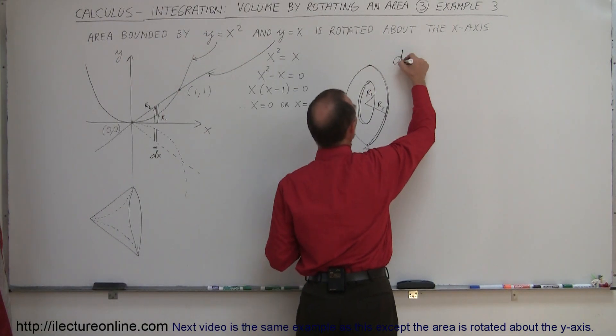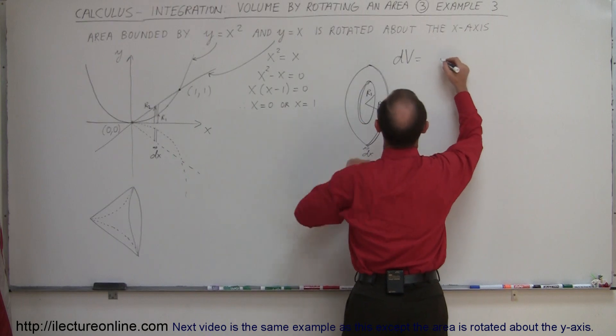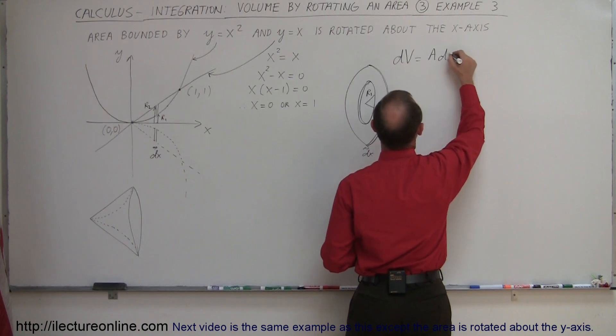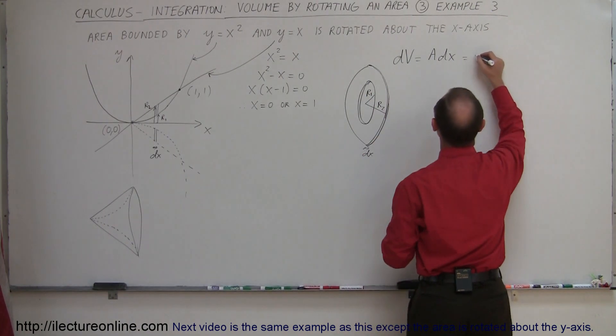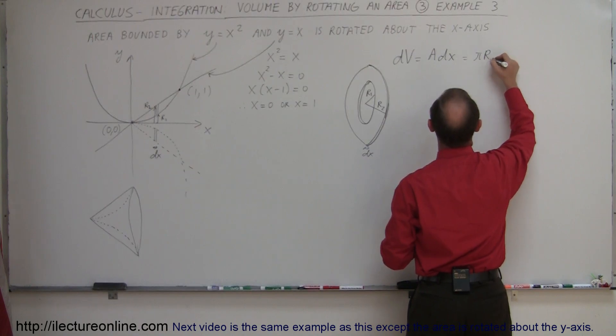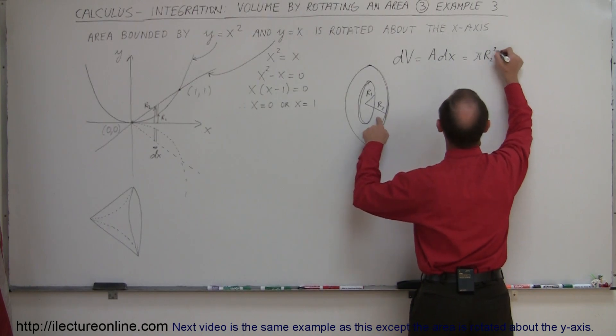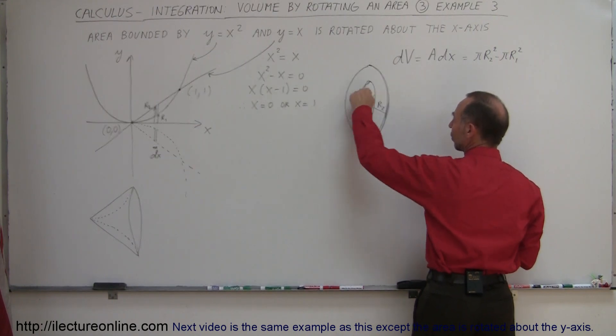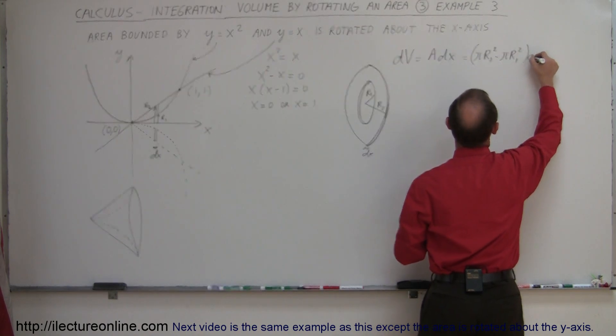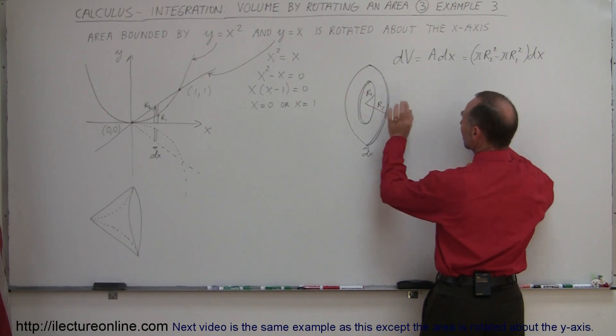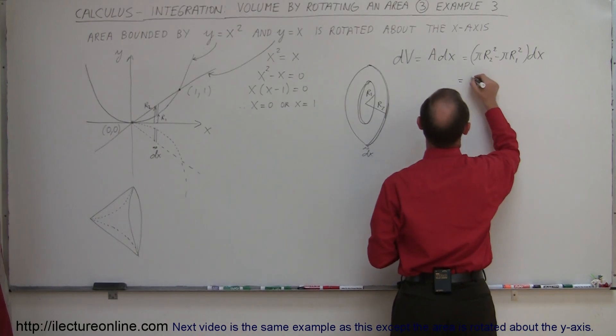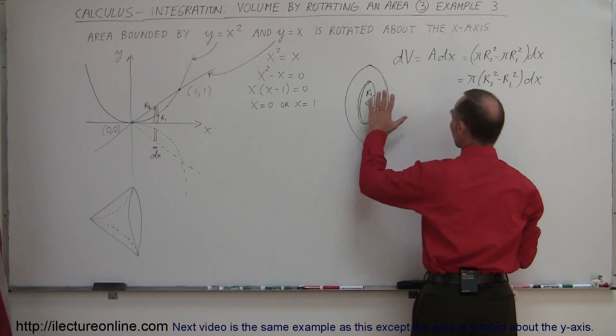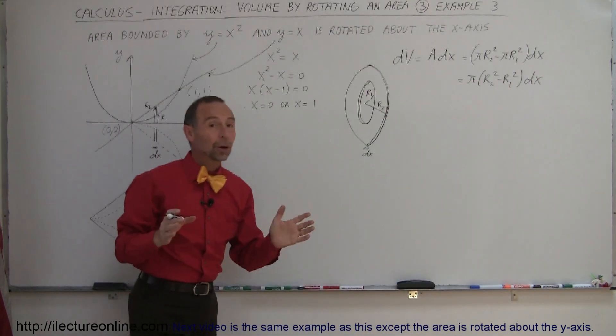We call this dv, a small little volume, which is equal to the surface area of that washer times the thickness, which is dx. So the area would be π times the outer radius squared, so r2 squared, minus π times r1 squared. That will be the area of the disk minus the area of the hole, multiplied by dx, the thickness. That gives you the volume of this washer.